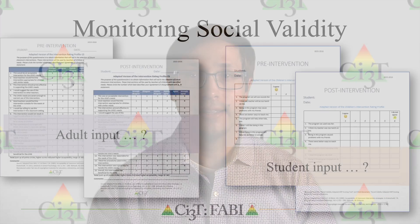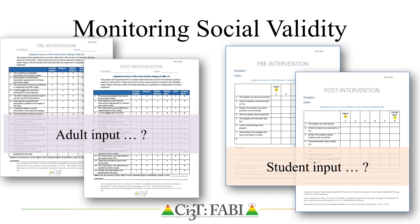In Step 4, a plan is also developed to monitor social validity prior to the start of the intervention and before training, to make sure the teacher, parents, and students have consensus on the goals, are comfortable with the procedures, and believe the intervention is likely to achieve the desired outcomes. The teacher and student are introduced to the intervention and complete social validity forms. If there are any serious concerns, such as the student feels the intervention would be embarrassing or the teacher does not feel it is feasible, procedures are revisited and modified accordingly.